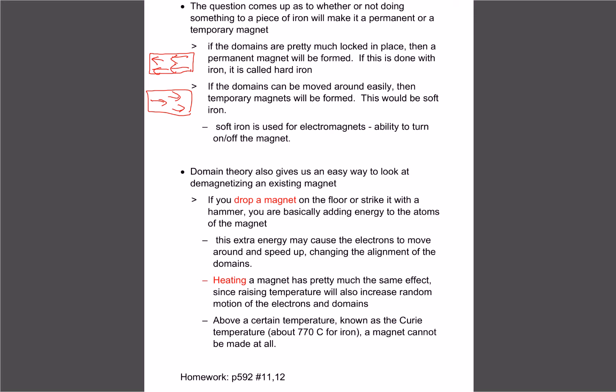If the domains can be moved around easily, so if we have a chunk of metal where the domains can be lined up if they're near a magnet, and as soon as we move the magnet they get all scrambled up and point in different directions again, then we say that would just be a temporary magnet. The name for that is, if we just create regular metal, we usually call it soft iron. Those domains are all scrambled up.